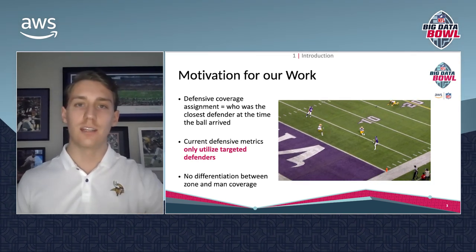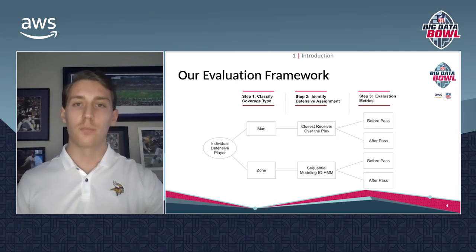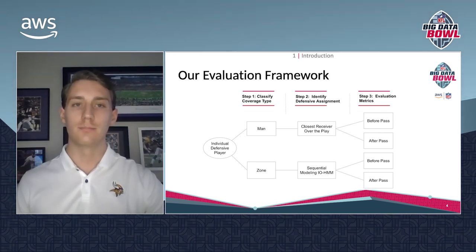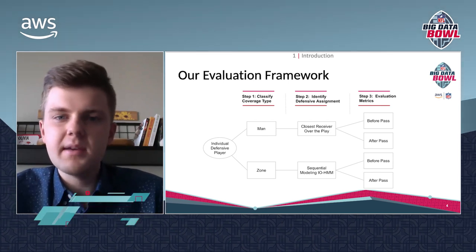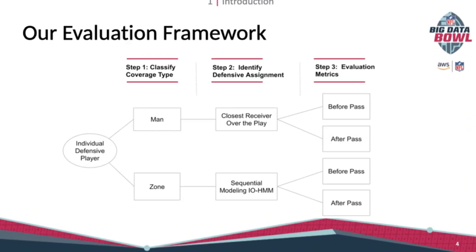The graphic on slide four provides a high-level overview of the process we took to get there. We use this framework to break down our project into three more manageable steps. First, we identify whether a defender is in man or zone coverage. Based on that, we identify which offensive players a defender was responsible for at different points throughout the play. Finally, when we have an idea of what a defender was trying to do, we apply a suite of model-based metrics to evaluate that player's performance.